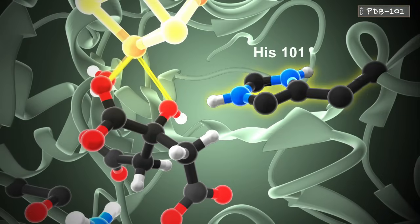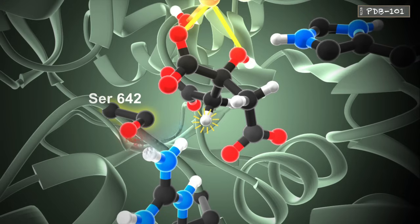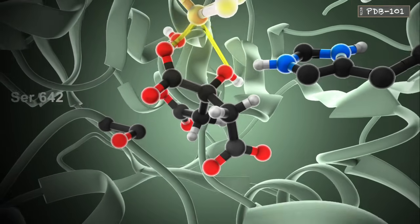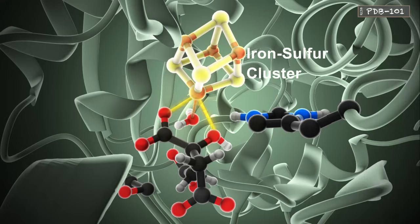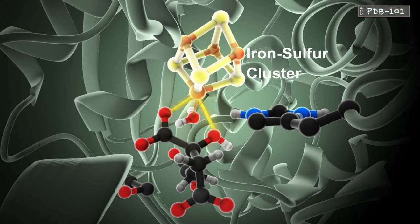Histidine 101 acts as an acid by donating its proton. Thanks to the chemical environment of serine 642, it can act as a base by accepting the proton from the substrate. The active site of aconitase also contains an iron sulfur cluster that stabilizes the substrate electrostatically and helps to position it relative to the catalytic residues.